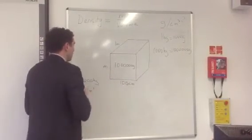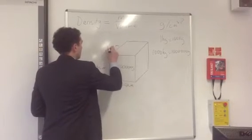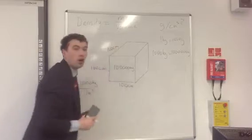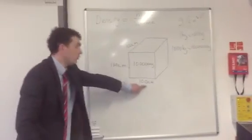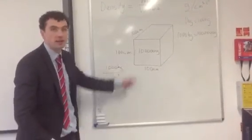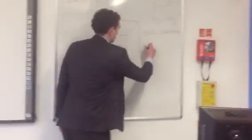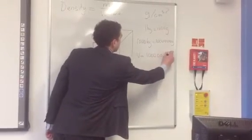So that's going to be 100 centimeters, that's going to be 100 centimeters, and this here is going to be 100 centimeters. The volume I can see is 100 centimeters, multiplied by 100 centimeters, multiplied by 100 centimeters, that's going to have a volume of 1 million centimeters cubed.